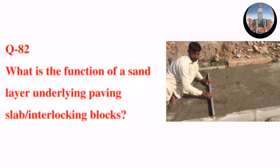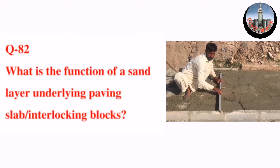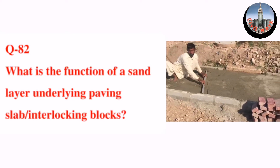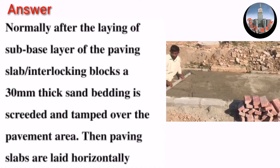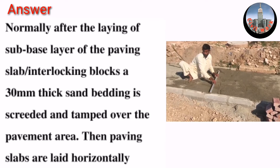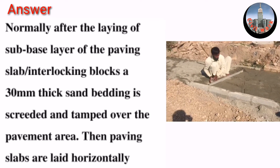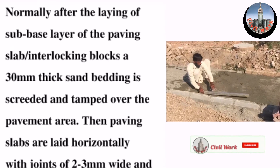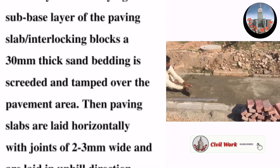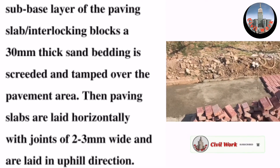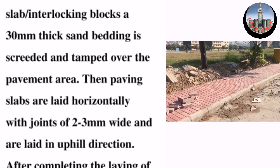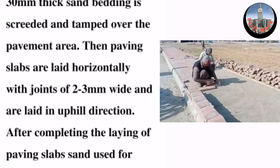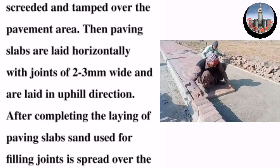Question number 82: What is the function of a sand layer underlying paving slab interlocking blocks? Normally, after the laying of the sub-base layer of the paving slab interlocking blocks, a 30mm thick sand bedding is screeded and tamped over the pavement area. Then paving slabs are laid horizontally with joints of two to three mm wide.